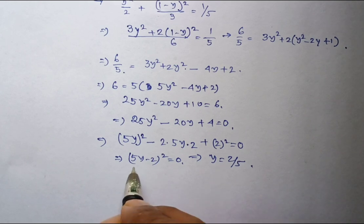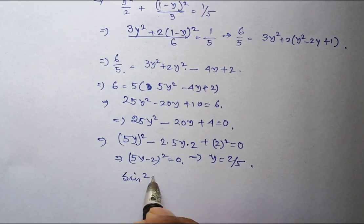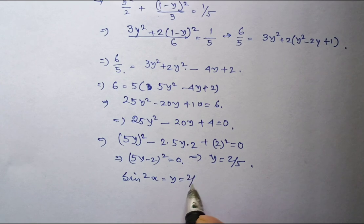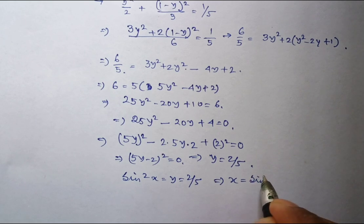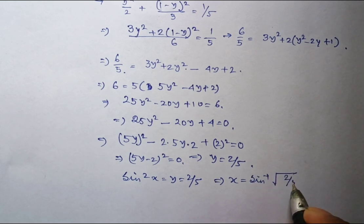Now what is my assumption? My assumption is sin square x equal to y, that is 2 by 5. So x equal to sin inverse square root of 2 by 5, and it will be plus minus.